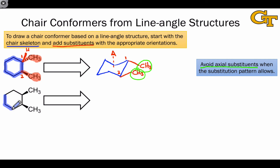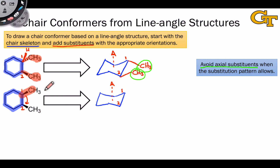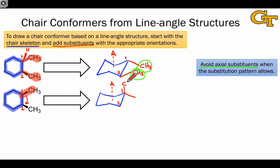To start the second case, we once again begin by drawing the chair skeleton using the parallel lines method. Numbering the carbons 1 and 2, we can pick any of the six carbons to start as carbon 1. With our viewpoint from above, carbon 2 is going to be oriented in a clockwise sense from carbon 1. The wedge on the first substituent indicates that the methyl group should be pointed up towards us in the chair conformer, and the position pointed up towards us at carbon 1 is clearly the axial position.